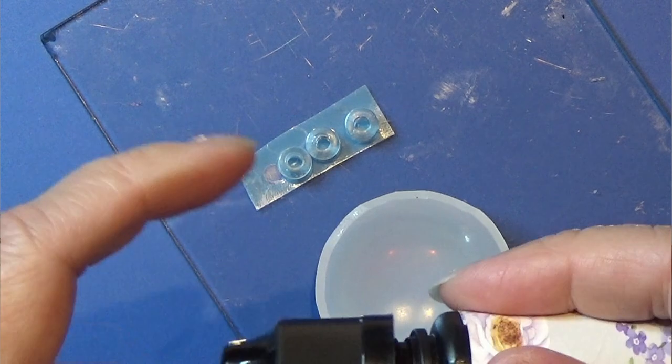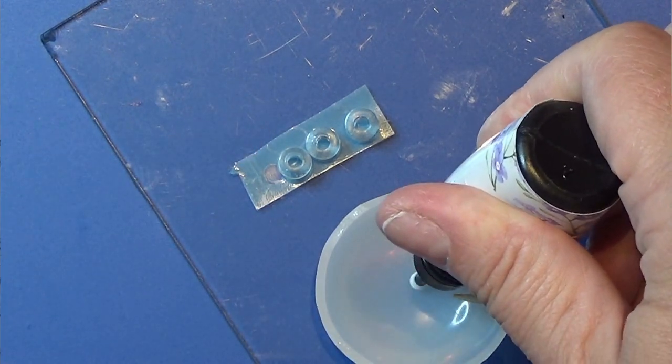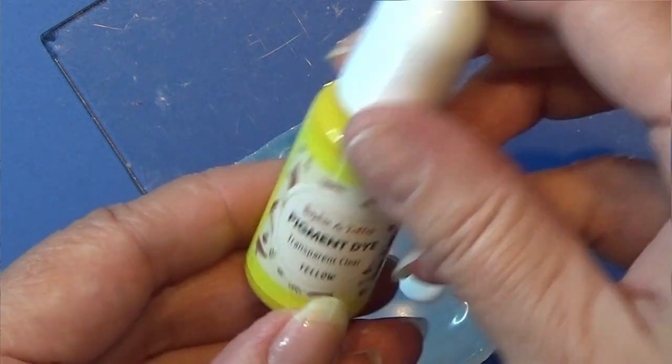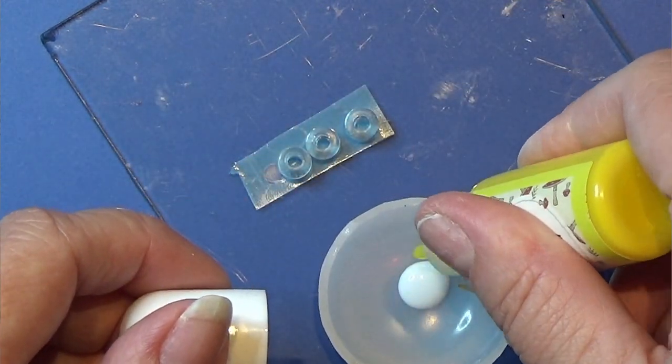I'm using some pre-colored UV resin and mixing it with a tiny bit of UV resin color to give it a color that I like. Mix it together really well.